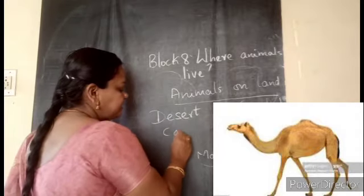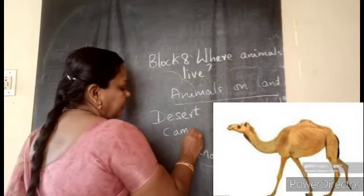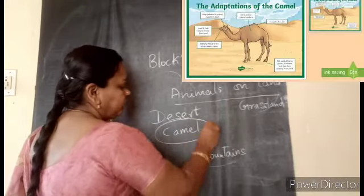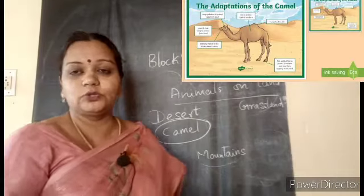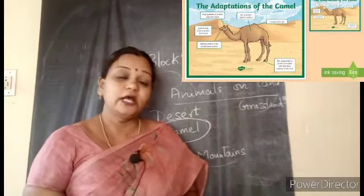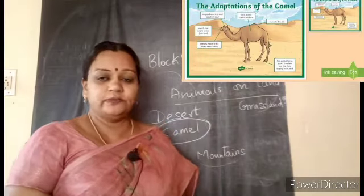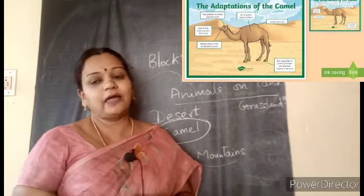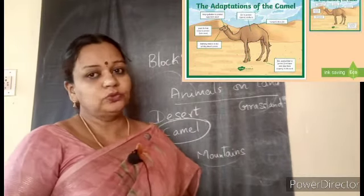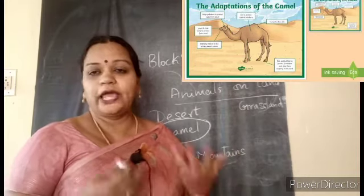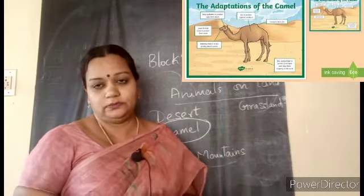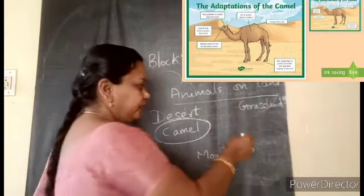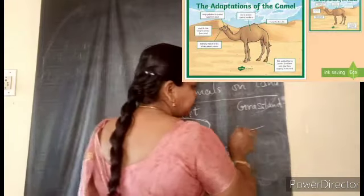Generally in deserts, which animal is commonly found? Camel. It is also called the ship of the desert because camels are mostly used for movement in the desert. And when we talk about the grasslands — lion — we can find lion and many other animals also.